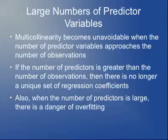In the really extreme case, if the number of predictors is greater than the number of observations — say you're doing a microarray experiment with 30,000 genes trying to predict 100 outcomes — there's no longer even a unique set of regression coefficients. There's actually an infinite number of possible regression coefficients, all of which will give you a sum of squared errors of zero. And when the number of predictors approaches the number of observations, your error will get closer and closer to zero, and that solution is almost certainly overfit.